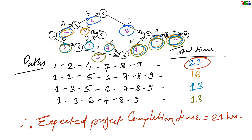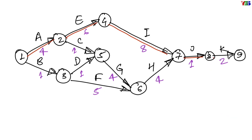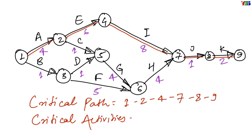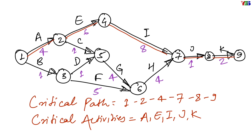Highlight the critical path by showing the activities involved with a double line arrow. Finally, our critical path is 1-2-4-7-8-9 and the critical activities are A, E, I, J, and K. The benefit of this analysis is that we now know we cannot delay these critical activities A, E, I, J, and K, but we can delay the other activities B, C, D, F, G, and H. By doing so, we will be able to complete this project in the minimum required time of 21 hours. This completes the critical path analysis.